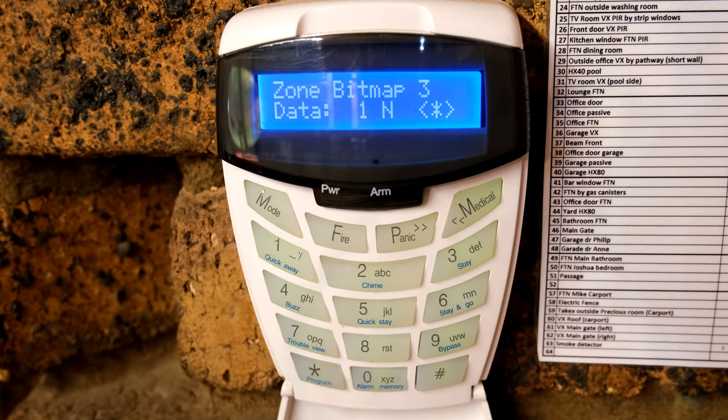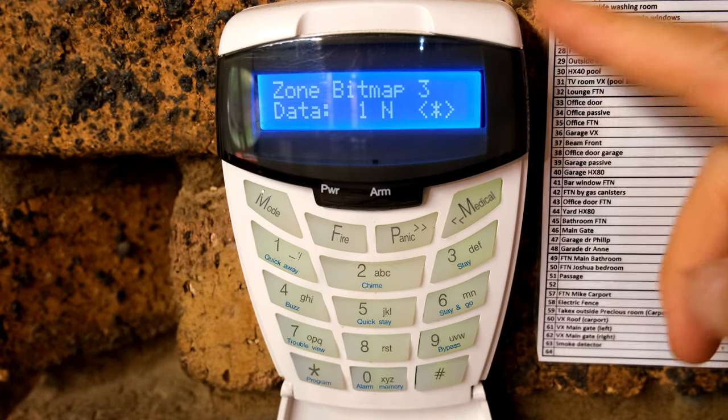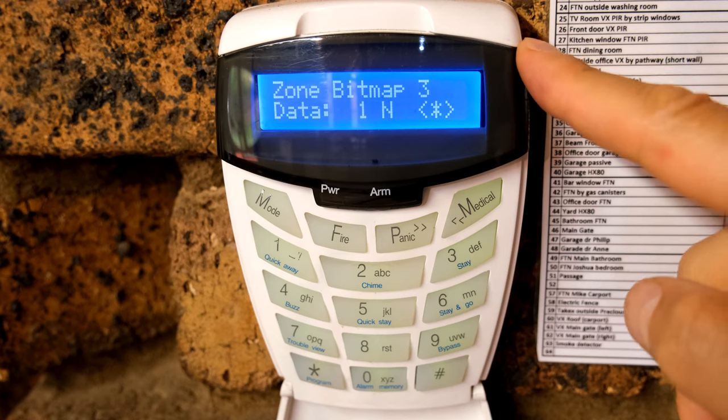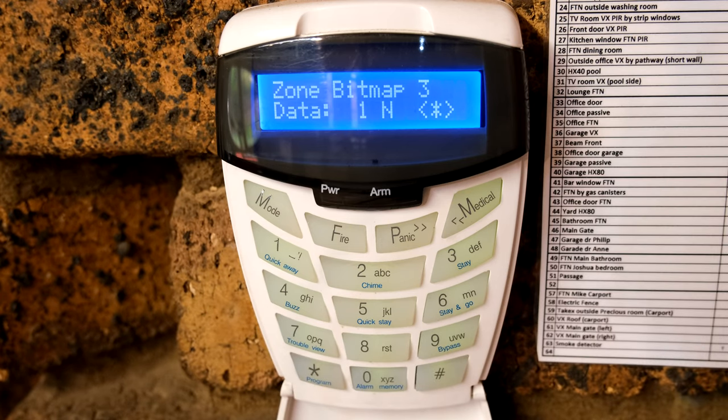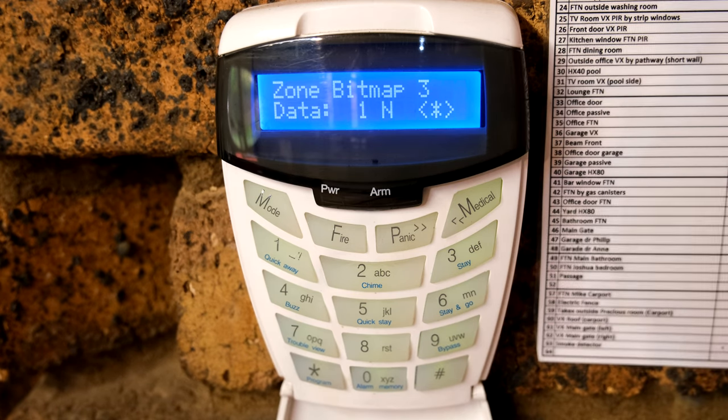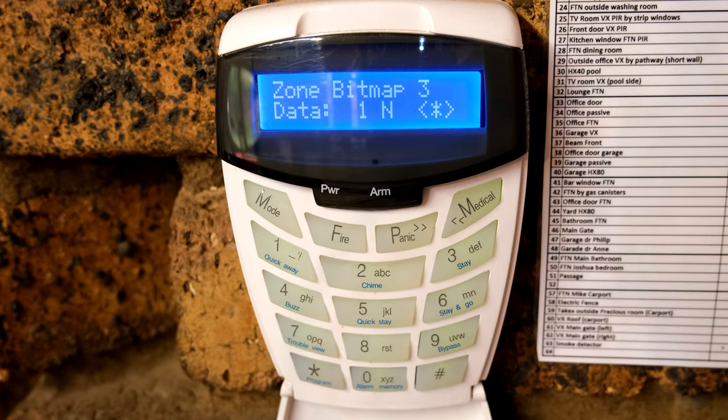If you do not tell the alarm that it's a tamper zone it will not interpret those voltages correctly. Remember that changing those two resistors changes the behavior of that zone. For example tamper now means 4.8 volts or 5 volts while violated is two and a half volts. So when you change the parameter on the zone the alarm will then interpret those voltages correctly.